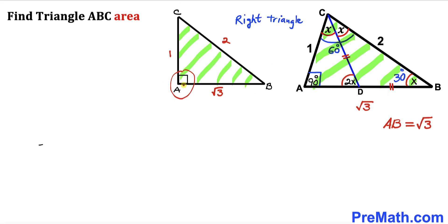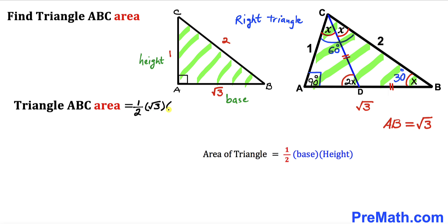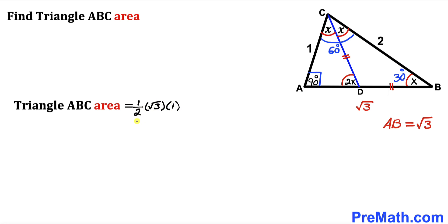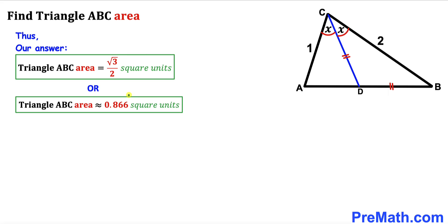Here's our final step: let's calculate the area of triangle ABC. Recalling the area formula: area equals one-half times base times height. In our case, the base is square root of 3 and the height is 1. So the area equals one-half times square root of 3 times 1, which gives us square root of 3 divided by 2 square units, approximately equal to 0.866 square units.